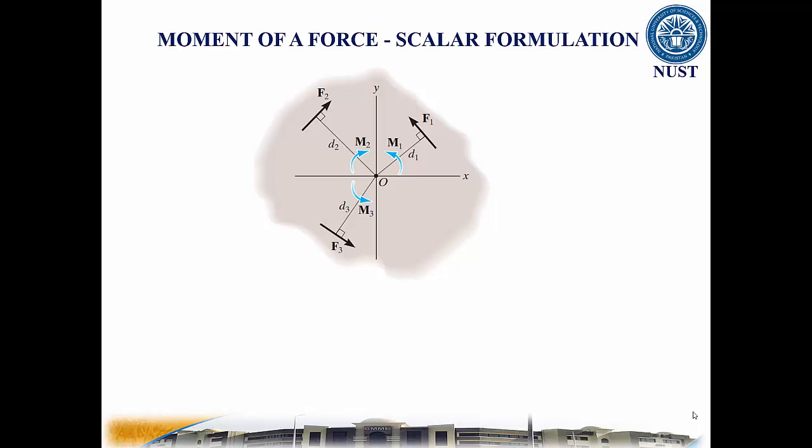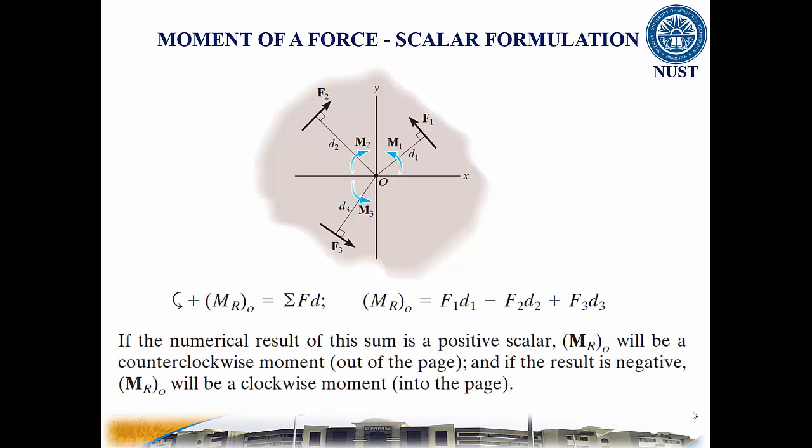Using sign convention, the resultant moment is therefore in this equation. If the numerical result of this sum is positive scalar, the resultant moment will be counter-clockwise out of the page, and if the result is negative, the moment will be clockwise into the page.